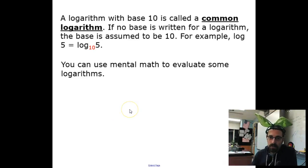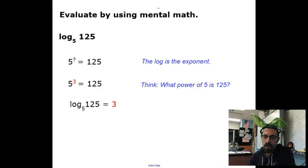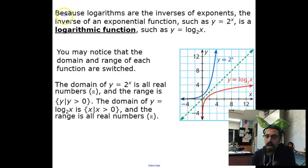A logarithm with base 10 is called a common log. If you see something that just looks like log of 8, if you don't see a little special base down there, you are to assume that the base is indeed 10. They want you to evaluate these using mental math. This means 10 to some power is 0.01. 10 to what power is 0.01? That would be to the negative second. See how that works? If you need to slow down or pause, take a look at the example. Try another one here. Log base 5 of 125. That means 5 to what power? Of course, that's 5 to the third.